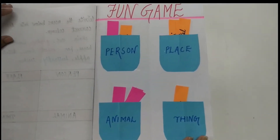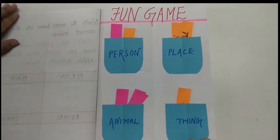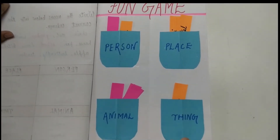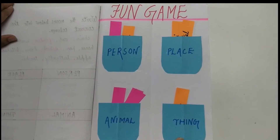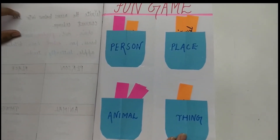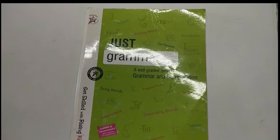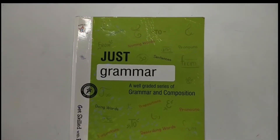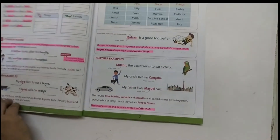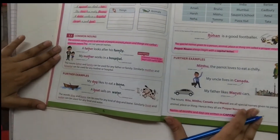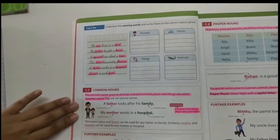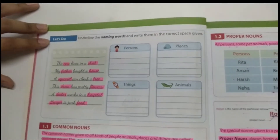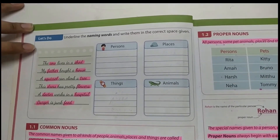Did you enjoy this activity? If you want to do this activity, you can do it in your English school notebook. Now, open your English grammar textbook to page number 6. Let's do: underline the naming words and write them in the correct space given.